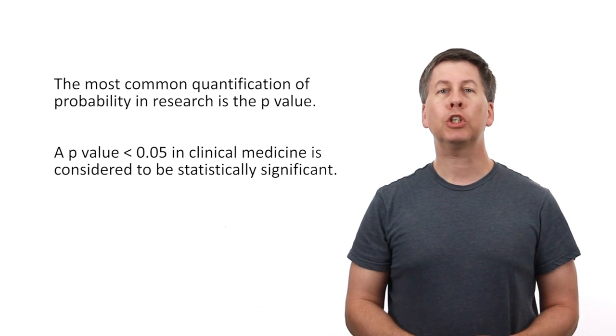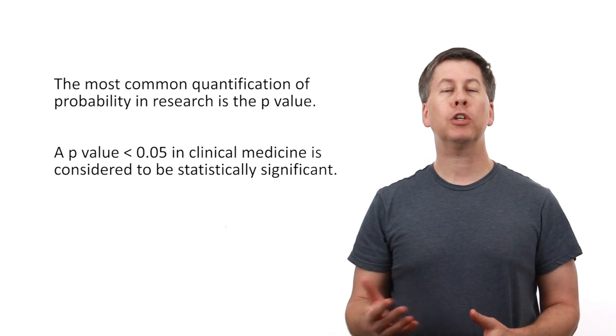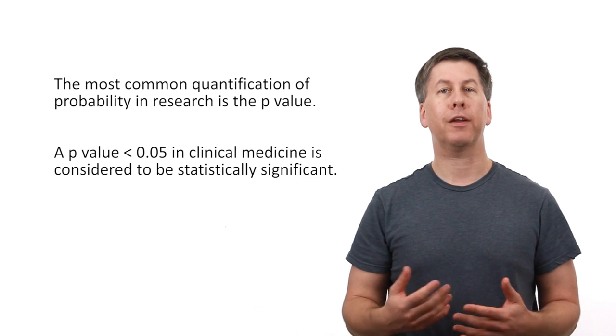The cutoff of 0.05 is frequently used to categorize studies. Studies of relationships with p-values below 0.05 are called positive, and those above 0.05 are called negative. Implied in this dichotomy is that a positive trial of a new drug suggests the drug works, while a negative trial of a new drug suggests it doesn't work.